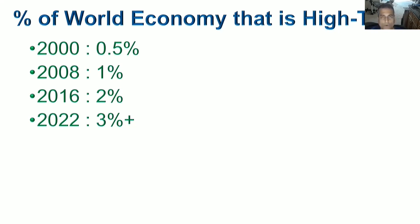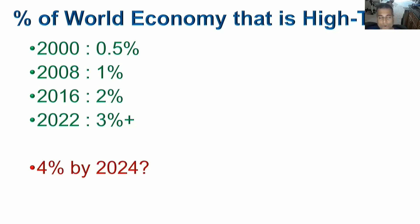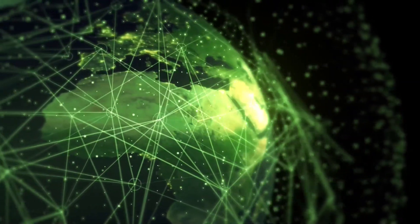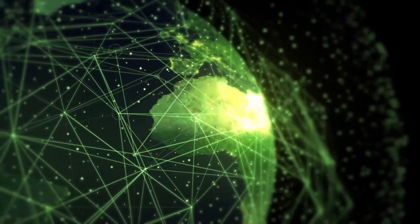Now we're at 3%, and getting from 0 to 3% took all of human civilization. But now big things are going to happen. The speed of change and the scale of technological disruption will be much faster — pretty soon we're going to see numbers like 4% by 2024, 8% by 2032, and of course 50% by 2062, give or take, which represents the technological singularity.